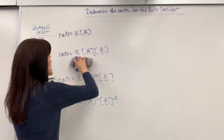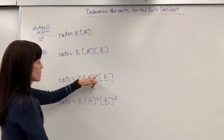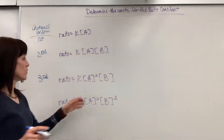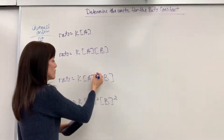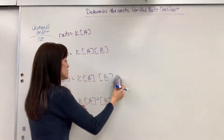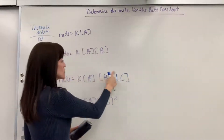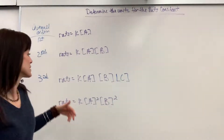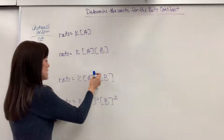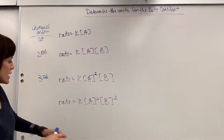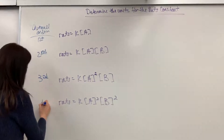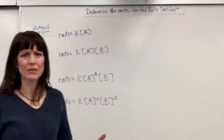Next, rate equals K times the concentration of A to the second order times B to the first order — 2 plus 1 gives us third order. You could also have A to the first, B to the second, or A, B, and C each to the first power — all third order examples. And rate equals K times A squared times B squared — 2 plus 2 — that is a fourth order reaction.